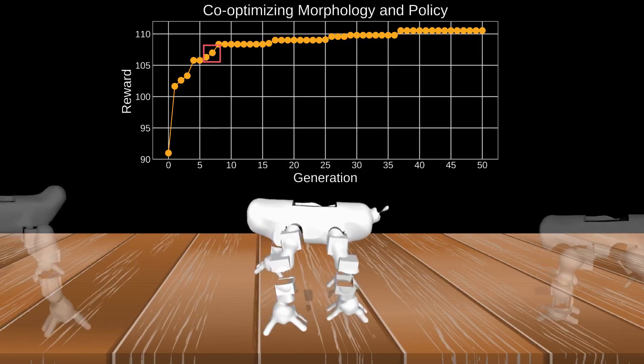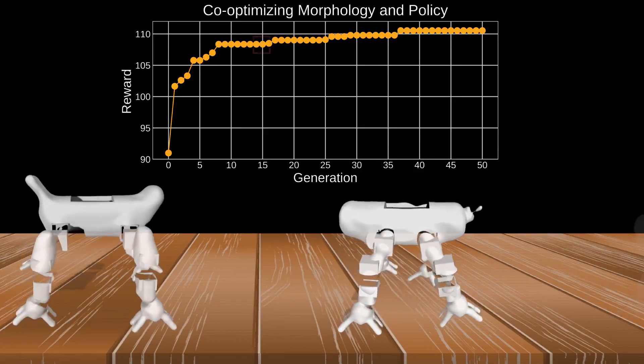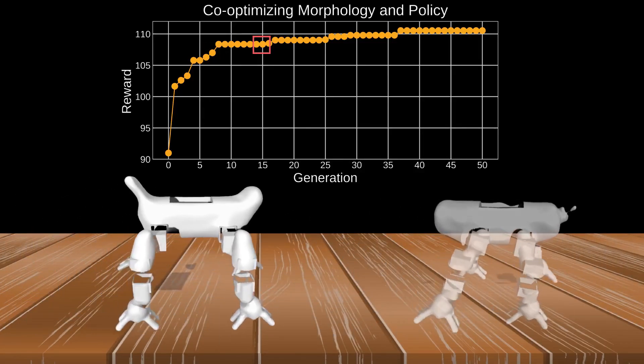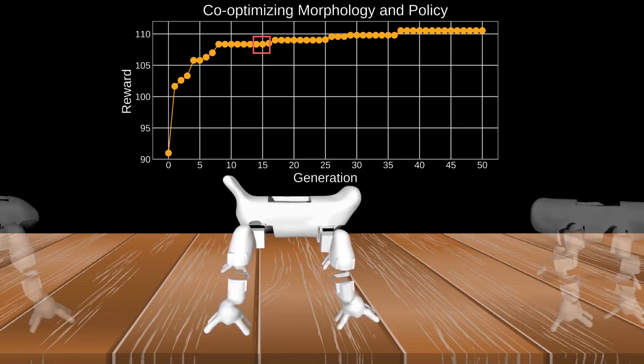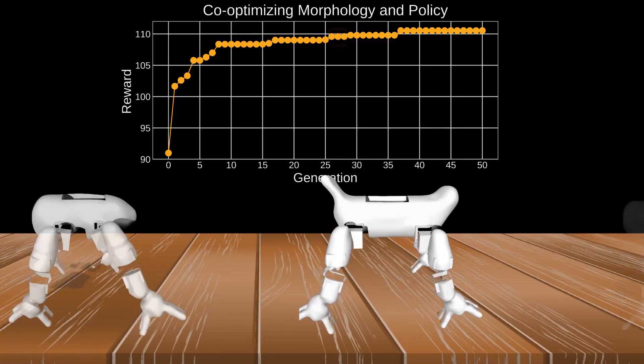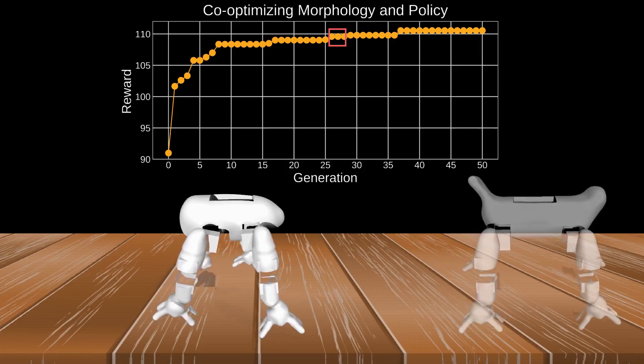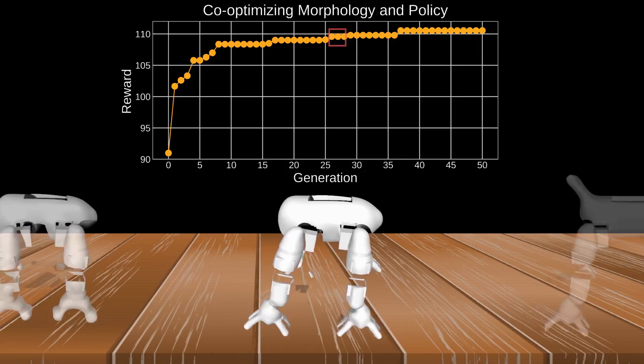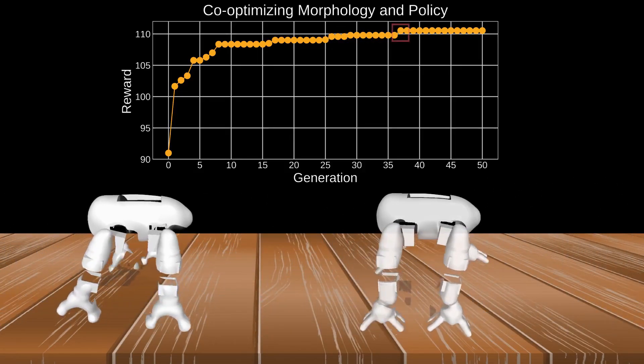As a result, our evolutionary algorithm plateaus much sooner than that of a traditional evolutionary method, which can take hundreds of generations to produce a sufficient walking policy. Our method allows greater speed and efficiency for automated robot design, while maintaining manufacturability considerations.